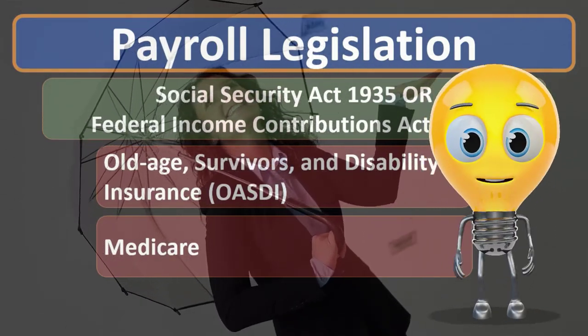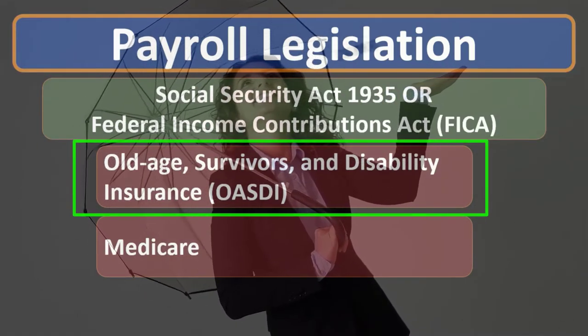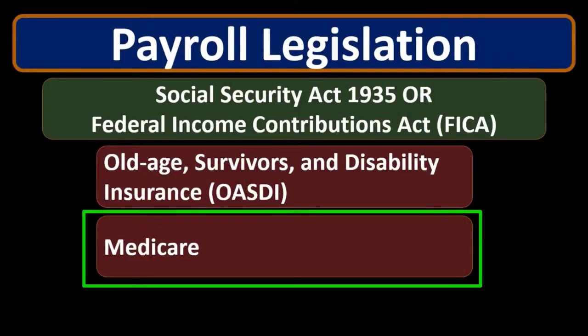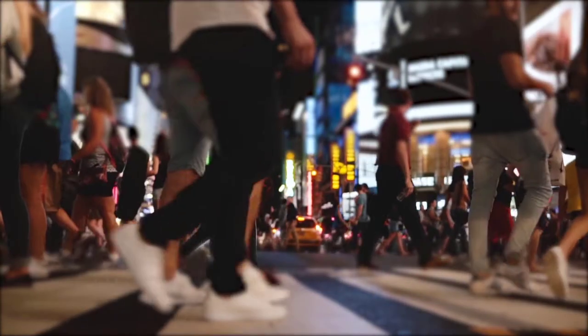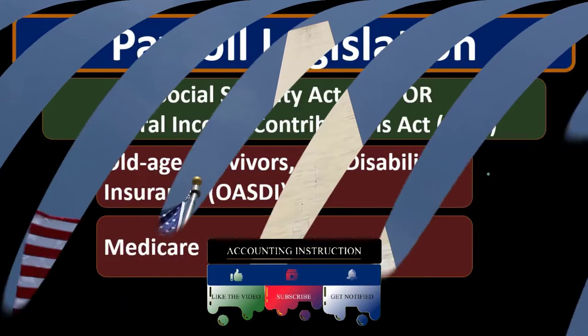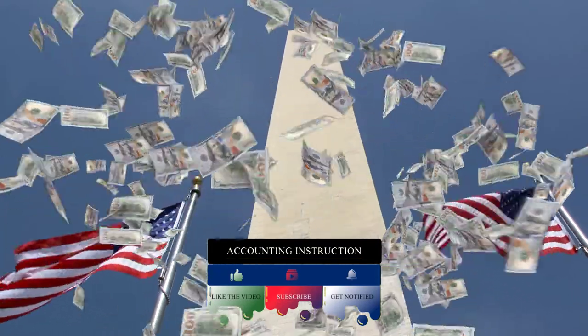When we think of FICA, we're thinking of two components: Old Age, Survivors and Disabilities Insurance, or OASDI, and Medicare. A lot of times people apply the term FICA to one or the other, typically to Social Security or OASDI, but it really comprises both of these components. Both fall under FICA, which is the Federal Income Contributions Act, otherwise known as the Social Security Act of 1935.